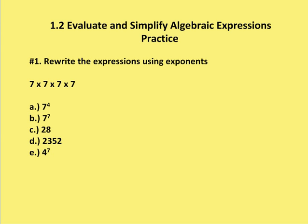So as we learned in the lesson, 7 times 7 times 7 times 7 is the same as 7 to the fourth. So a is your correct answer.